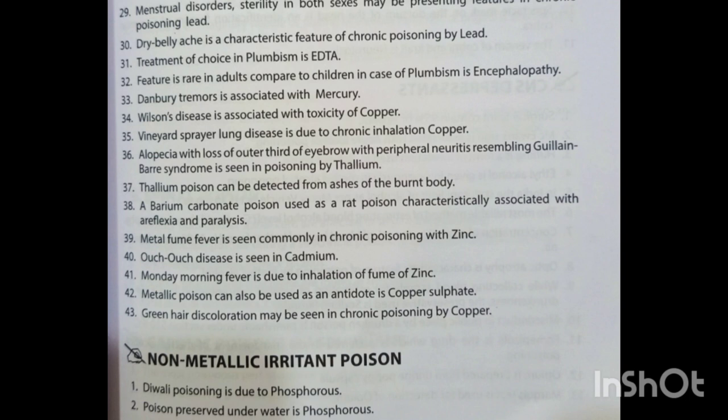Alopecia with loss of the outer third of the eyebrow and peripheral neuritis resembling Guillain-Barré syndrome is seen in thallium poisoning. Thallium poison can be detected from the ashes of a burnt body. Barium carbonate used as a rat poison is characteristically associated with areflexia and paralysis. Metal fume fever is seen commonly in chronic zinc poisoning. Ouch-ouch disease is seen in cadmium poisoning. Monday morning fever is due to inhalation of zinc fumes. A metallic poison that can also be used as an antidote is copper sulphate. Green hair discoloration may be seen in chronic copper poisoning.